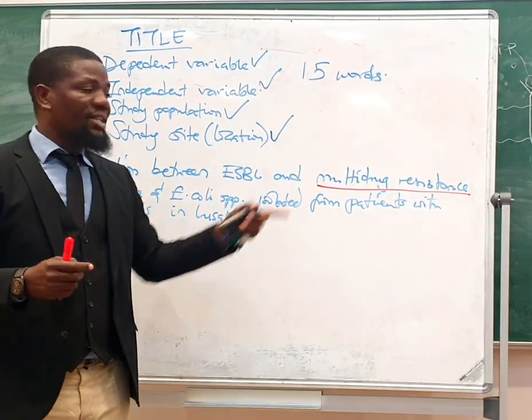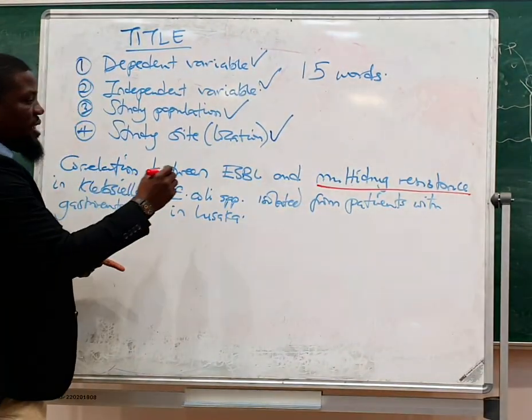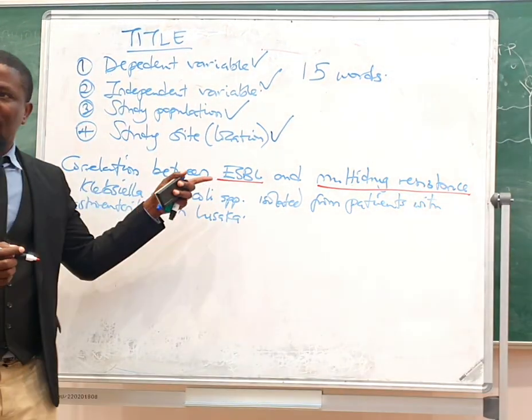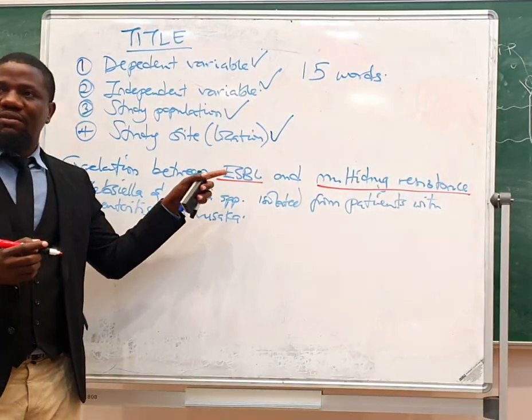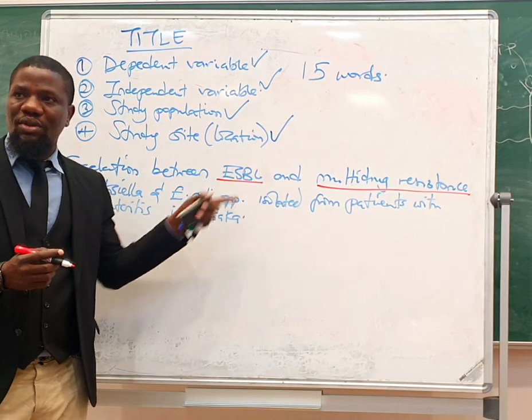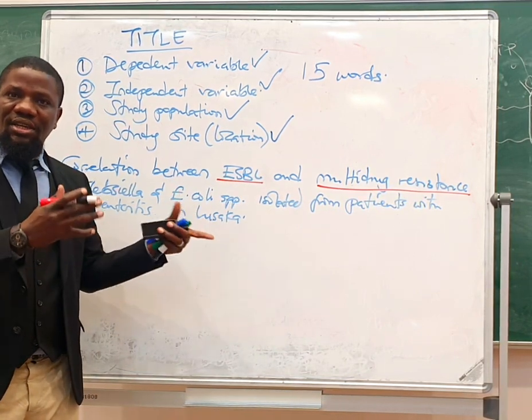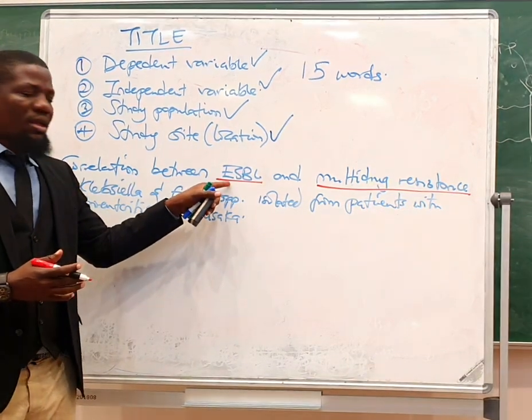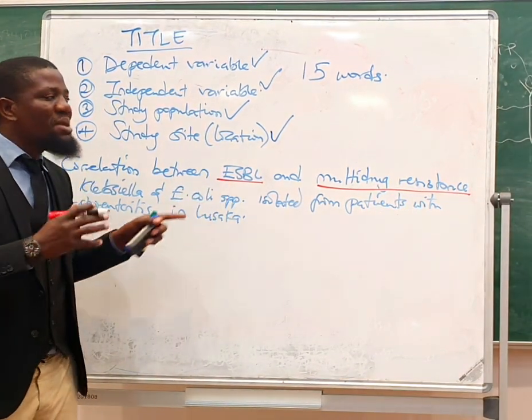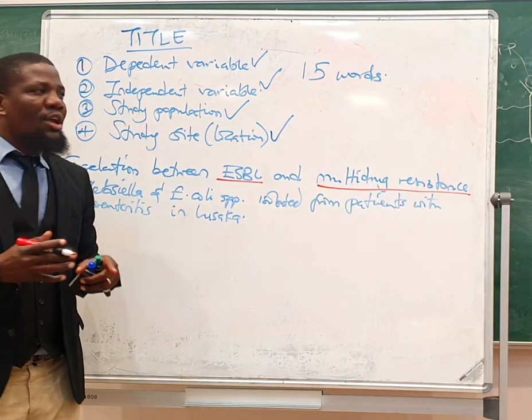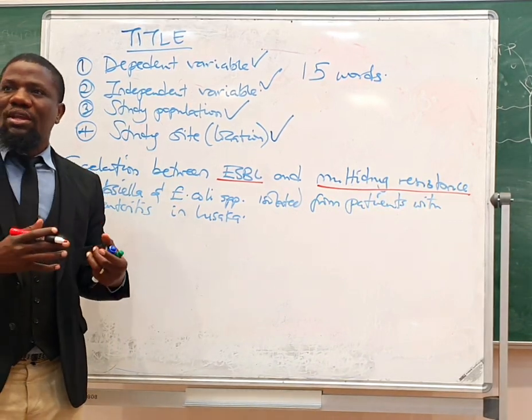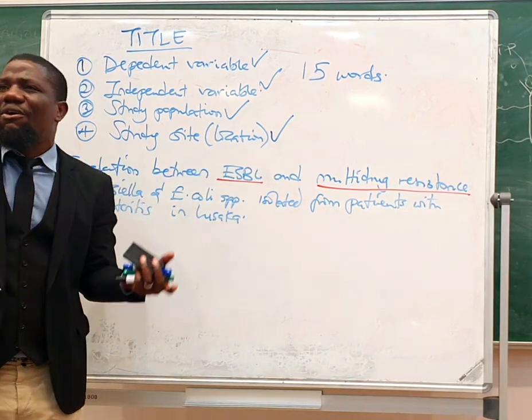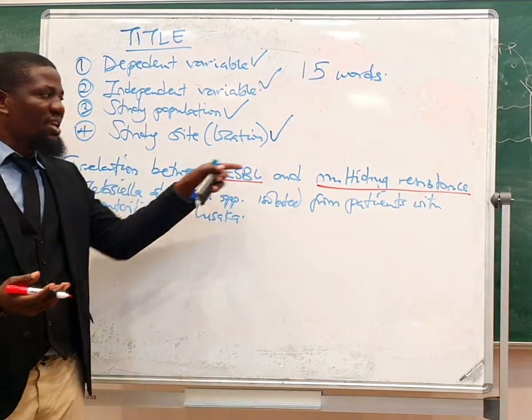And then ESBL, you would want to say some would have ESBL, others would not. So already, you are seeing that this is also a dichotomous variable. Immediately you are saying all this, you even are knowing that this is how I am going to write my hypothesis, this is even how I will compute my sample size.